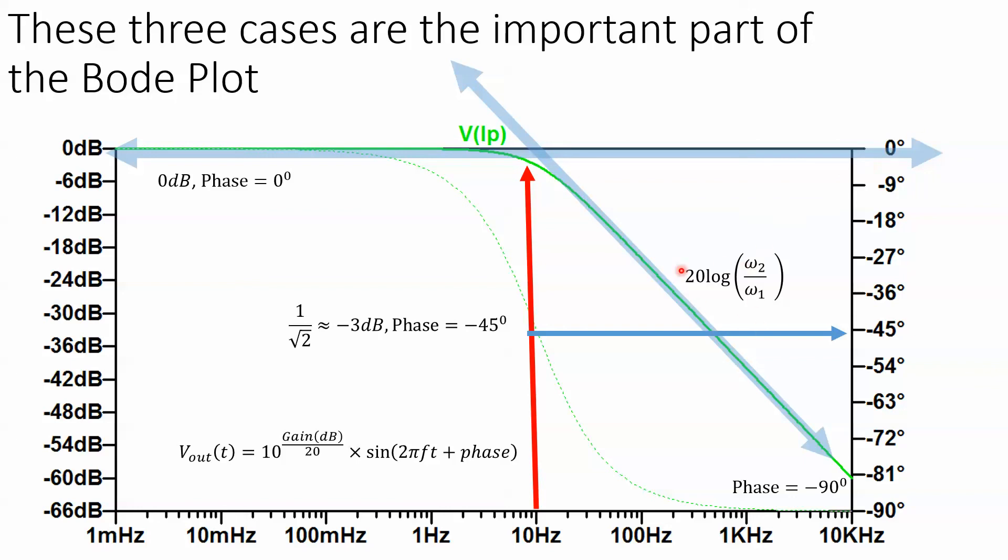When we're much greater than, we actually get 20 log ω₂ divided by ω₁, which is a straight line, which is another asymptote. And it can be a little bit hard to draw, but the intersection of this should be at the cutoff frequency, which is minus 3 dB, which we can more easily pull off from minus 45 degrees, 10 hertz, rather than trying to find 3 dB and then 10 hertz.